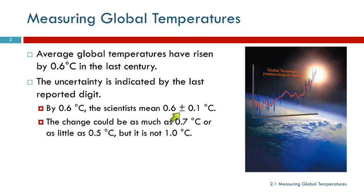So this implies 0.6 plus or minus 0.1 degrees Celsius, meaning it could be as high as 0.7, as low as 0.5, but we know it's definitely not a whole degree. We could debate whether global warming is real or not, whether the evidence supports that — we're not going to get into that. But it is important to understand the concept of uncertainty in measurements.